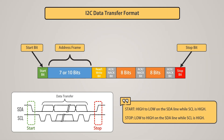The address frame is the immediate frame after the start bit. The master transfers the slave's address with which it needs to communicate. The slave compares its own address with the received address; when they match, it transmits a low-voltage acknowledge signal to the master. When addresses do not match, the slave remains idle and the SDA line stays high. The read or write bit indicates the direction: when it is 1, the master is transmitting data to the slave; when it is 0, the master is receiving data from the slave.